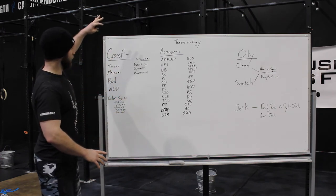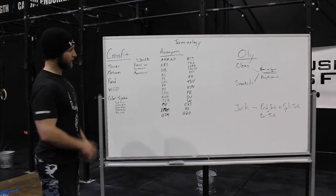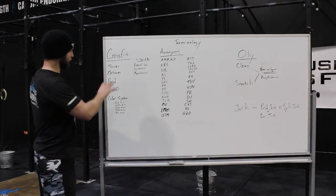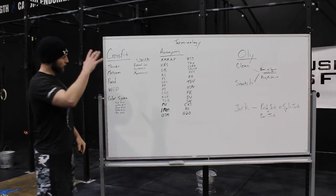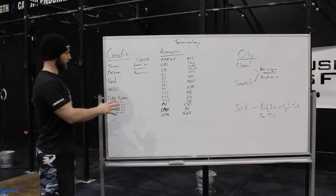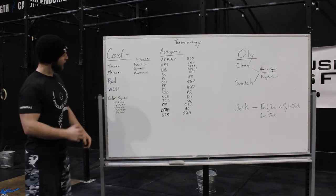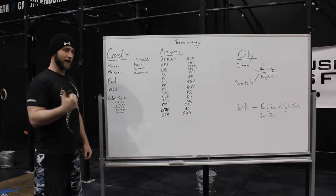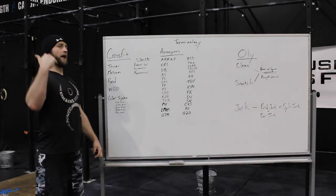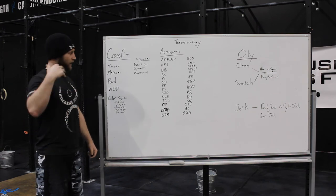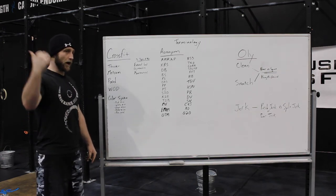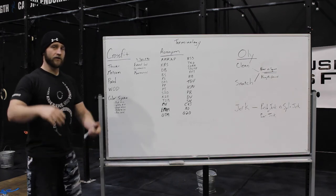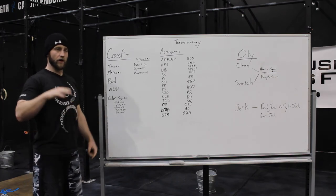First, in the CrossFit section, a couple of areas where people get confused. A thruster — this is just like a wall ball: you go into a full front squat and then come up out of that squat, fully extended overhead. All the way down, all the way up — full range of motion squat, full range of motion with the barbell overhead. It can be dumbbells, barbells, or any object. It's simply the front squat to overhead position.